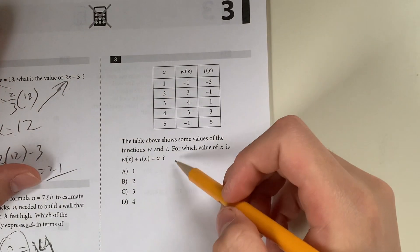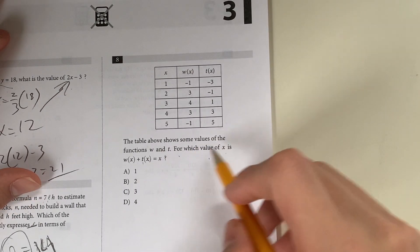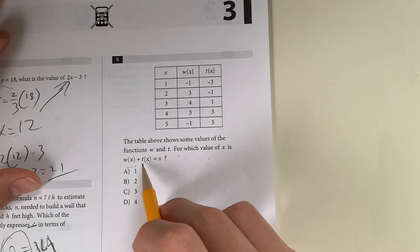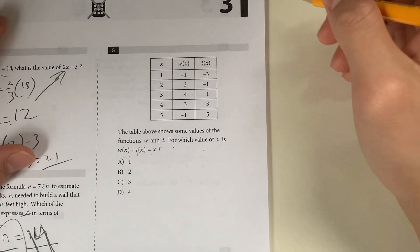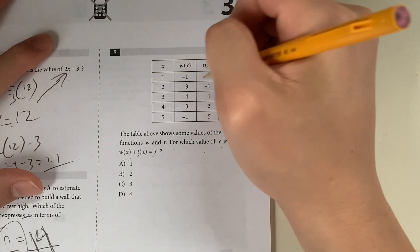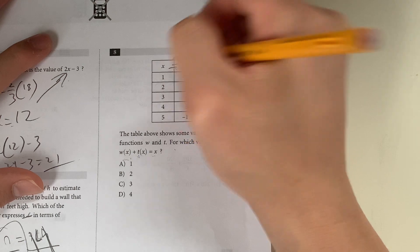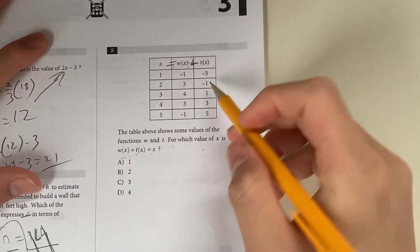Question 8. The table above shows some values of the function W and T. Which of the following is W of X plus T of X equal to X? This might be very confusing. Basically, what that means is that when you add these two values, W of X and T of X, it should equal this. We add them up.